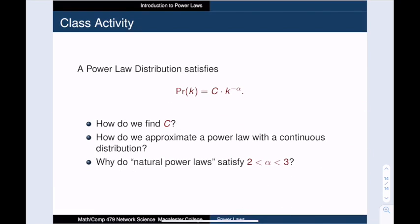This concludes our introduction to power laws. In a power law, the probability of a vertex of degree k is c times k to the minus alpha.